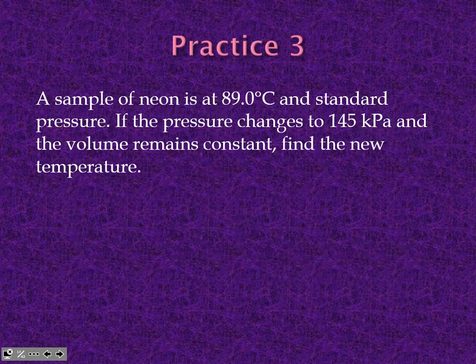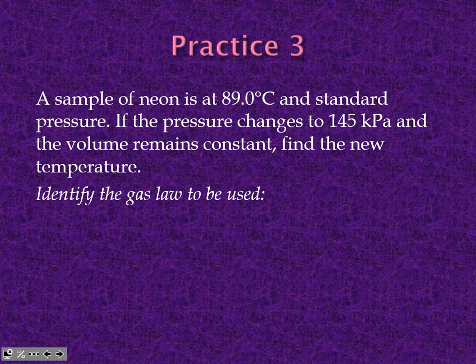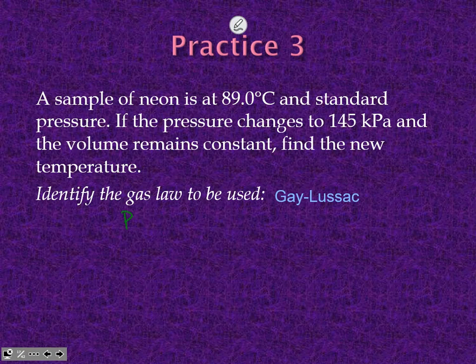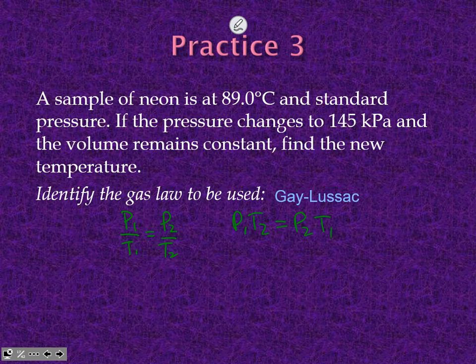For practice problem 3: volume is remaining constant, so the gas law to use is Gay-Lussac's Law. You can write it as P₁/T₁ = P₂/T₂, or use the cross-multiplied form P₁T₂ = P₂T₁ — either is fine. Notice we have a sample of neon and we need to add 273 to convert to Kelvin. 89°C + 273 = 362 K, which is T₁.